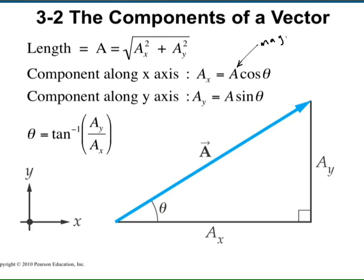If you know the magnitude and the angle, you can do the reverse and calculate the components. If you know the components, you can calculate the magnitude and the angle. To find the angle from the components, just divide the y-component by the x-component and take the inverse tangent. When you do this in your calculator, you will find the angle in degrees or radians.